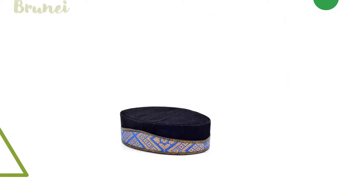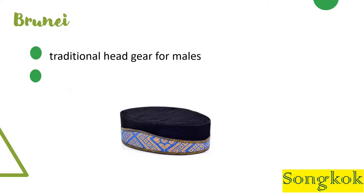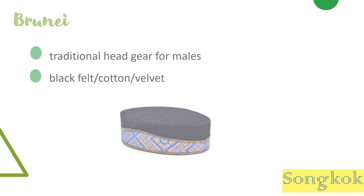Songkok is a traditional headgear of the Malay community. It is used to complete a customary attire especially during formal occasions. Songkok has a peculiar shape and is made of black felt, cotton, or velvet. It is widely used by Muslim men in Indonesia, Malaysia, Brunei, Southern Philippines, and Southern Thailand.